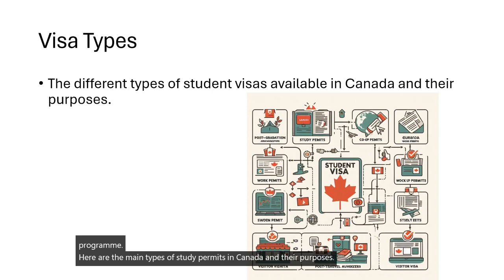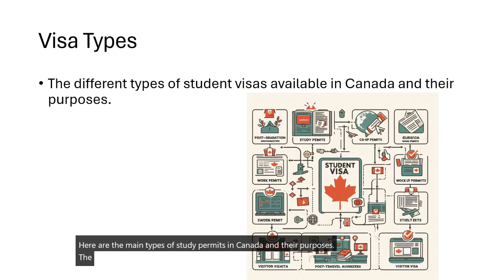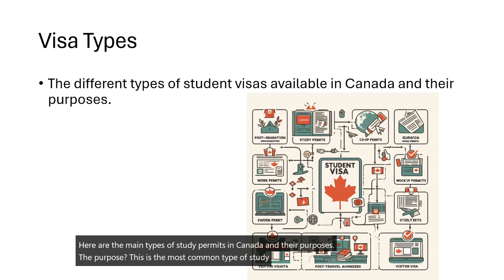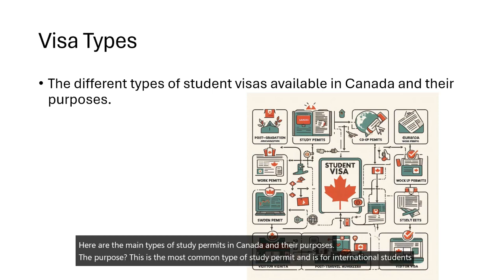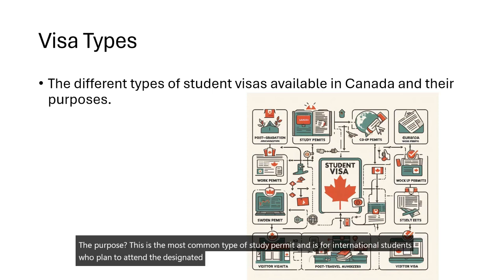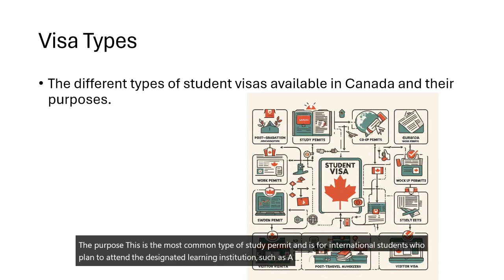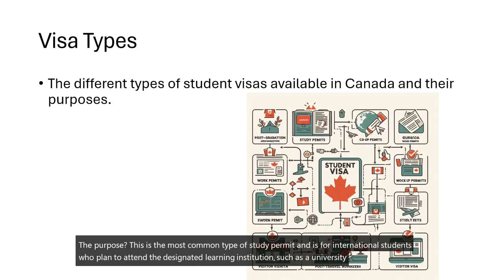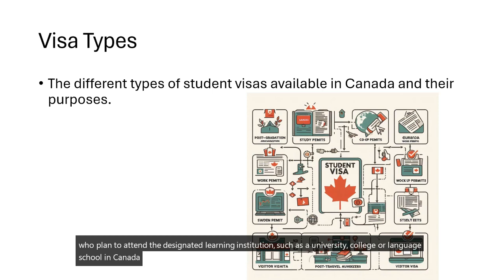Regular Study Permit: This is the most common type of study permit and is for international students who plan to attend a designated learning institution, such as a university, college, or language school, in Canada for a program that is longer than six months.